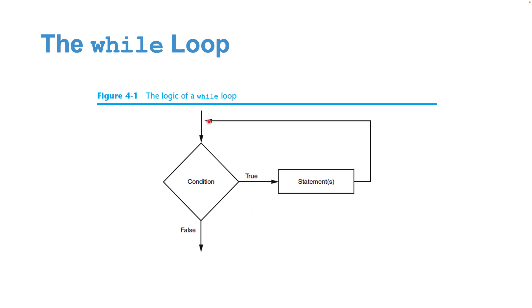Let's look at this in the format of a flowchart. Imagine we have an input and we are checking for the condition. If the condition is false, the program will exit. However, if the outcome of the test is true, the program will run a set of statements — all the actions that are required, whatever you have written in your code.